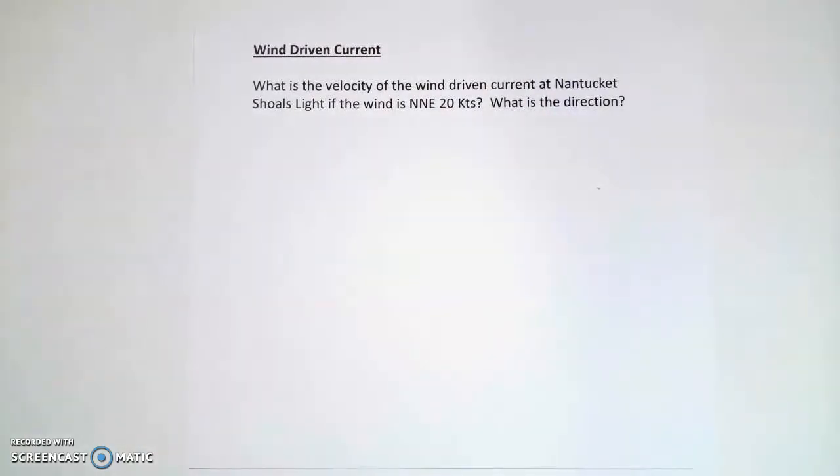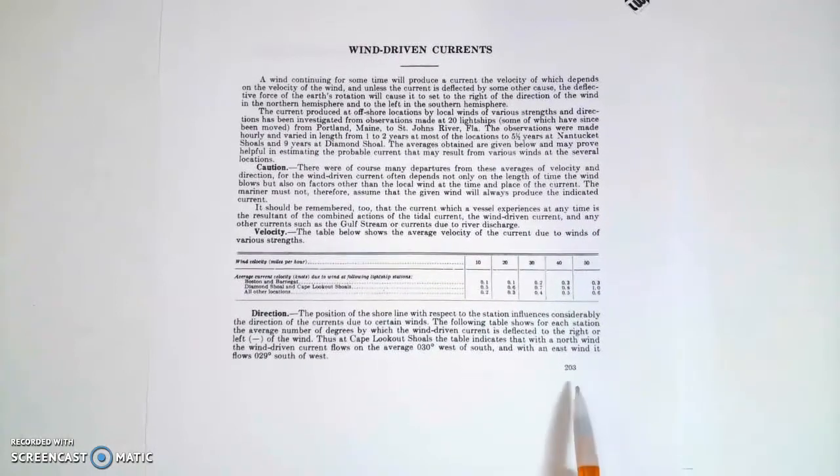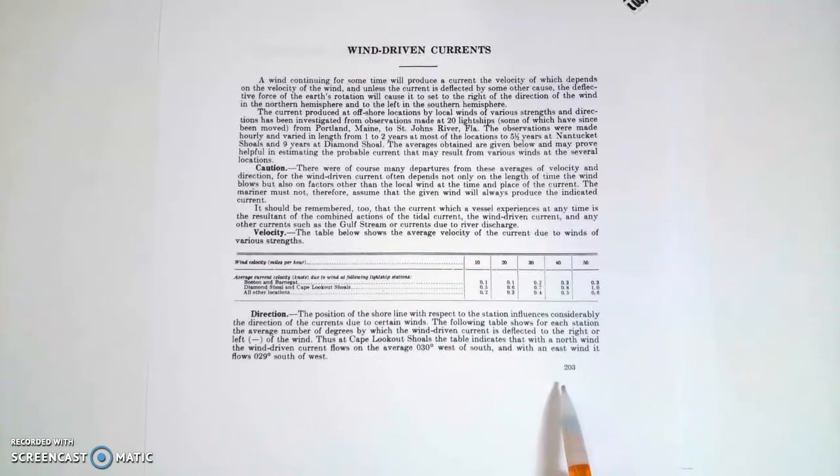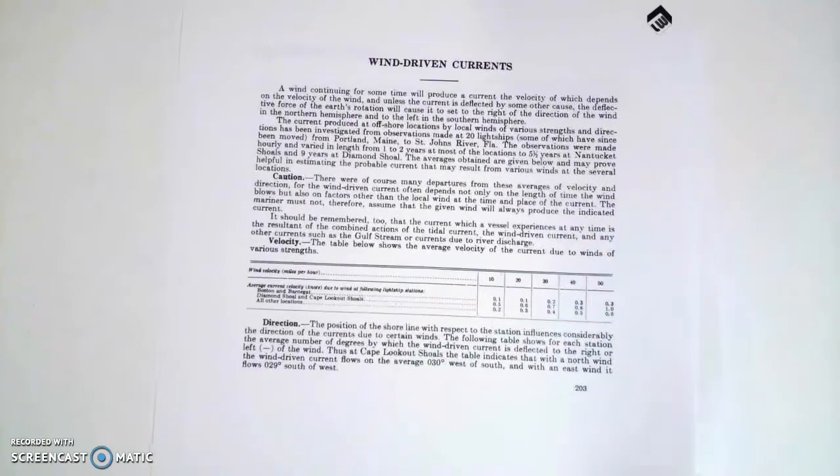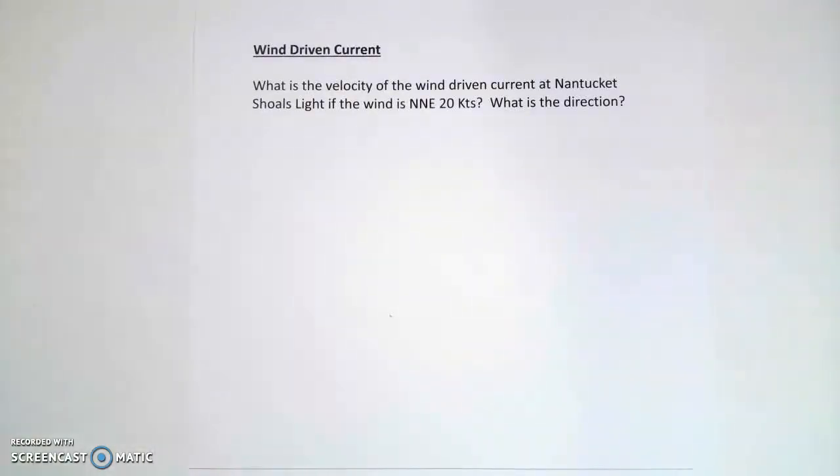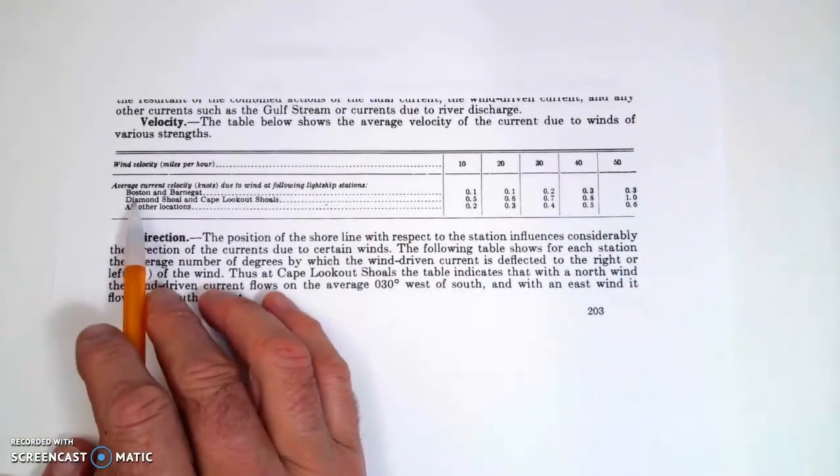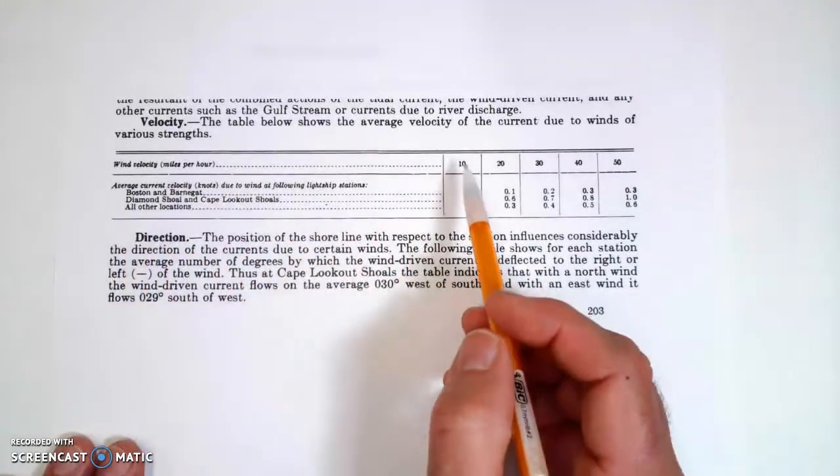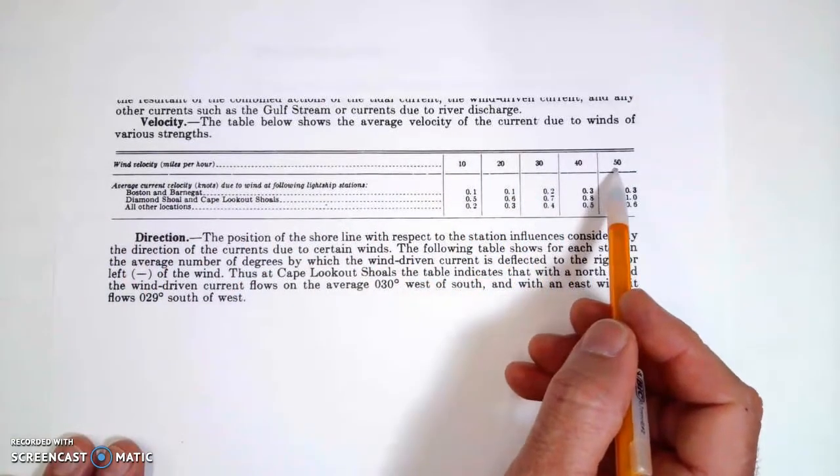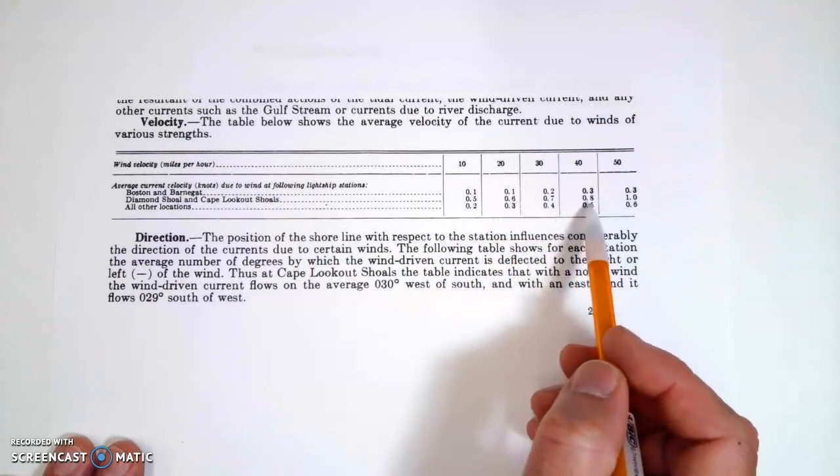Alright, so first up, we're going to end up going to page 203 in the tidal current book for 1983. Now, this is a little bit small, so I have a kind of a zoom in here. Alright, but basically, we've got, this is our table, and this is wind velocities,